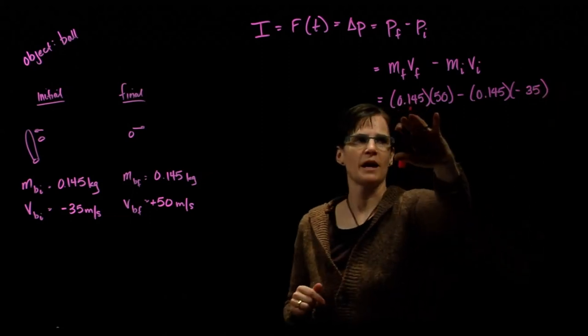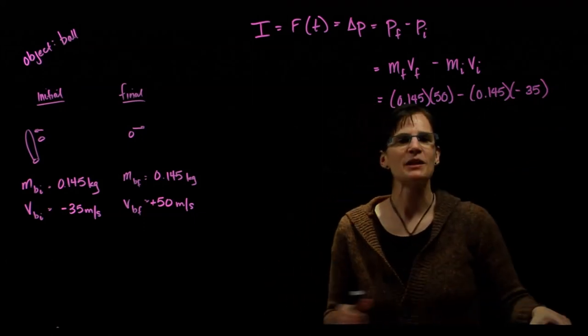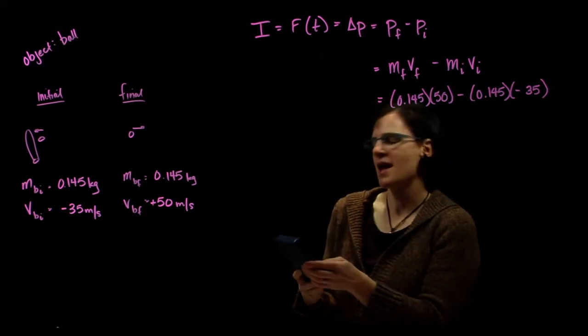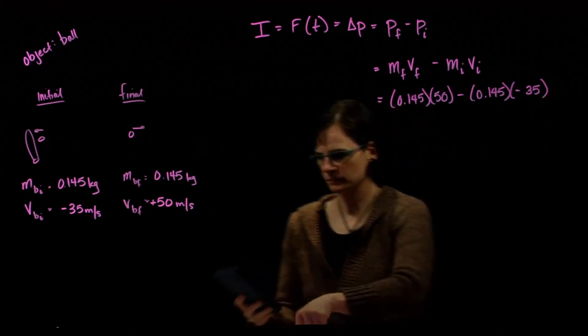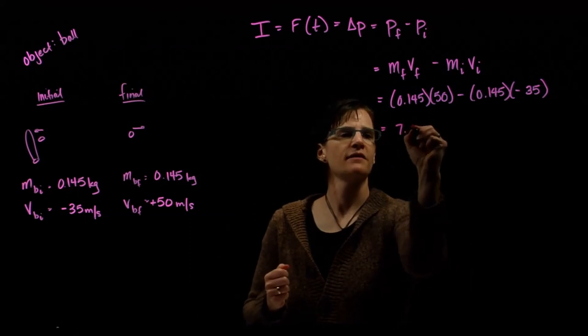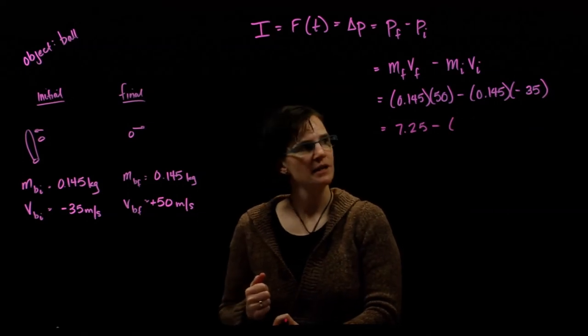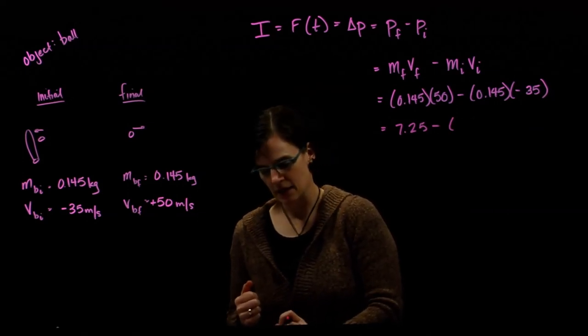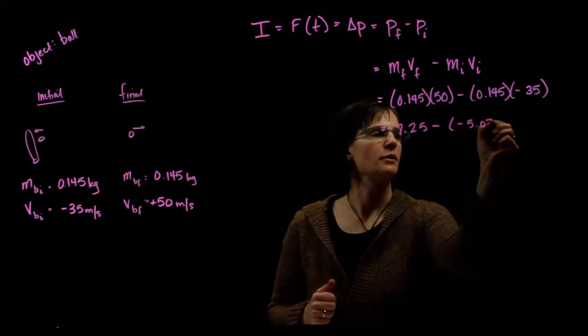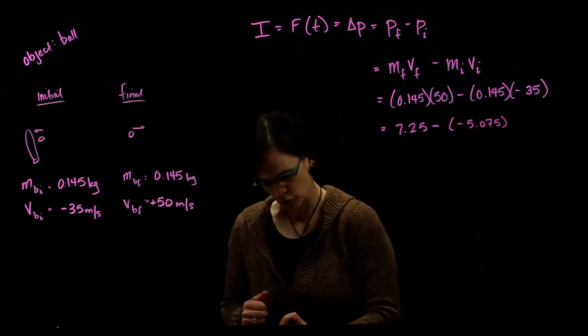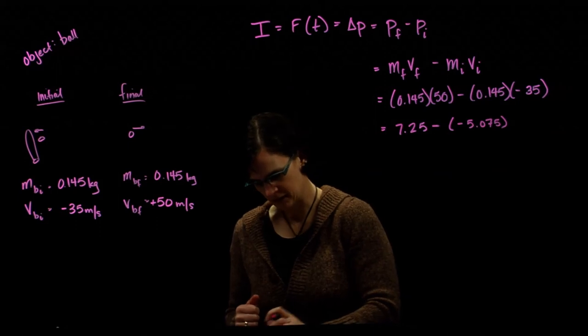So we have 0.145 times 50 minus 0.145 times negative 35. The direction is in play for both velocities, and we can calculate the momentum. Taking our calculator, 0.145 times 50 gives a momentum of 7.25. 0.145 times negative 35 gives minus 5.075. Those two added together, 5.075 plus 7.25.